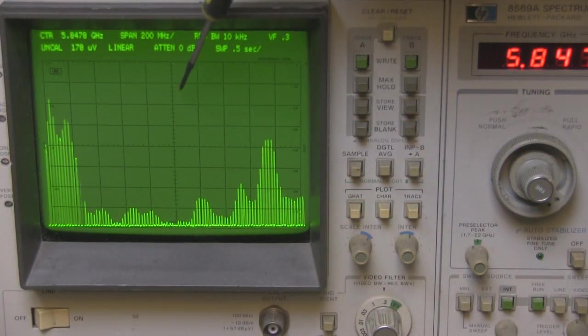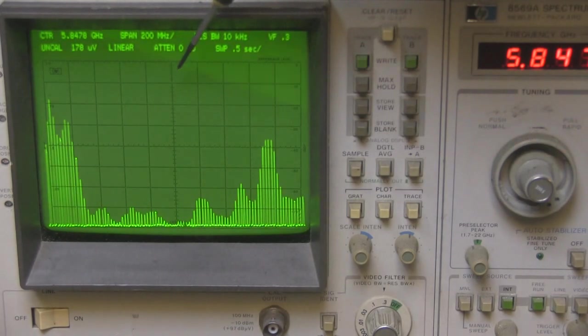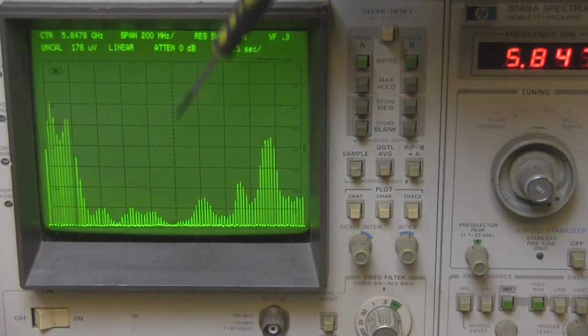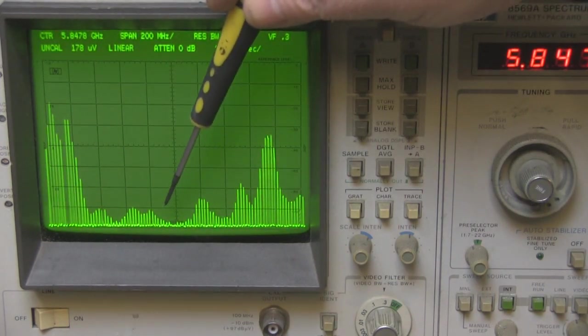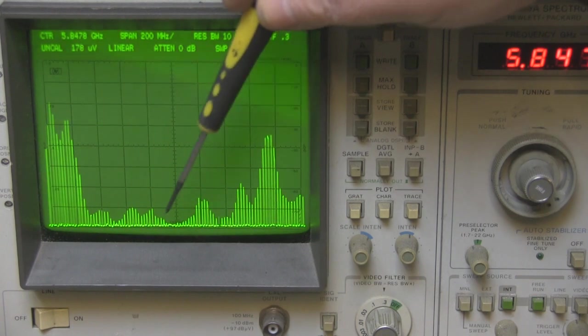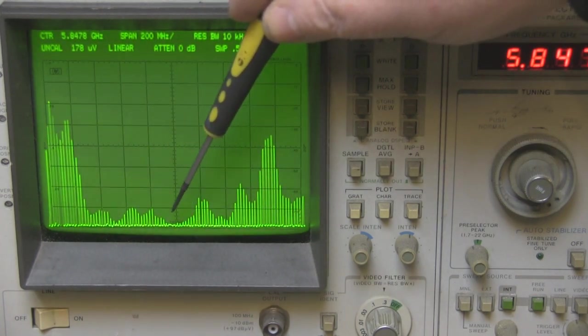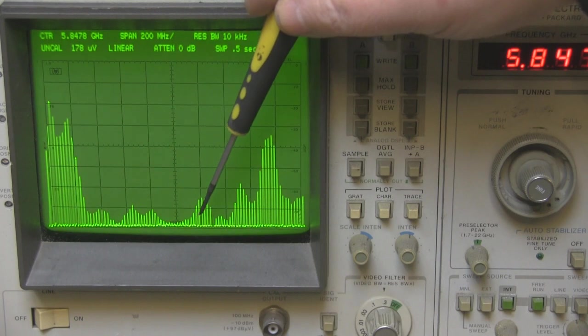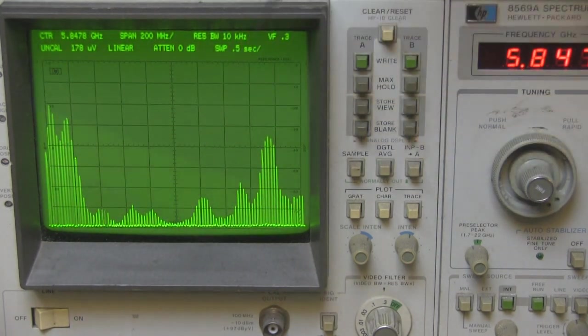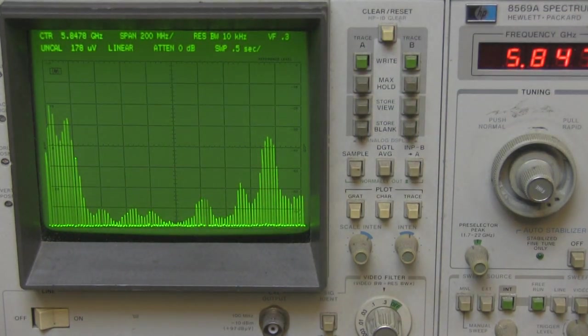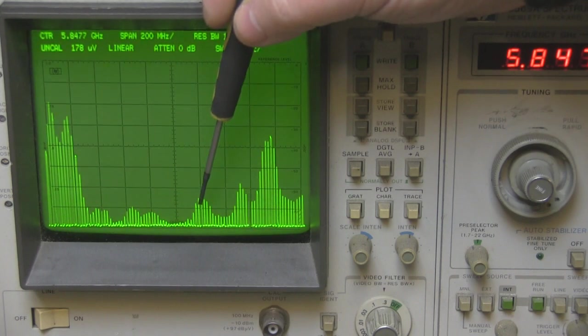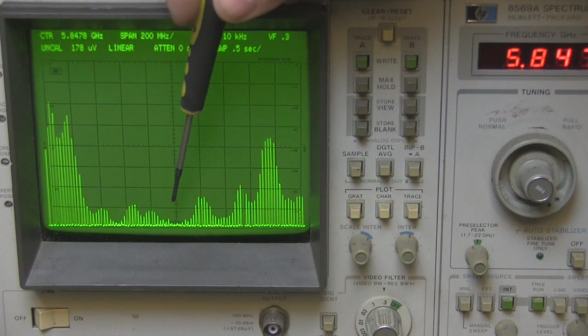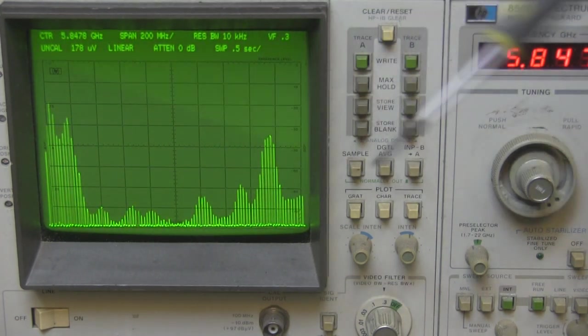So here it is on the spectrum analyzer then. It's centered on 5.847 gigahertz, that's the center line running down here. But just look at the output there on its frequency of operation across the spectrum. See how really low it is, just like the Pagona antenna was, super super low. It was really an almost perfect antenna. You can see how wide this is here.